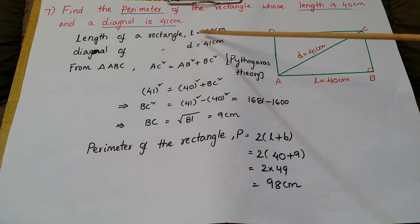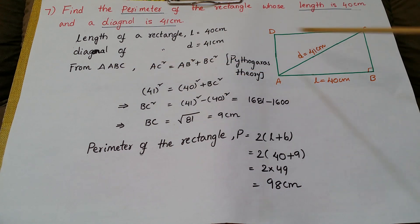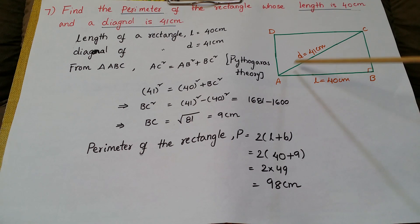Length of the rectangle L is 40 centimeters, diagonal is 41 centimeters. From triangle ABC, this is a right angle triangle, so AC square is equal to AB square plus BC square. This is AC square, hypotenuse, so this square is equal to this square plus this square from Pythagoras theorem.